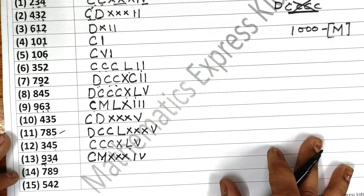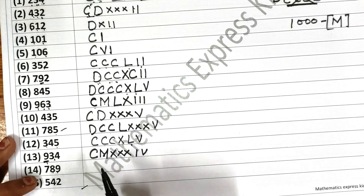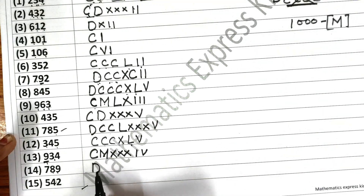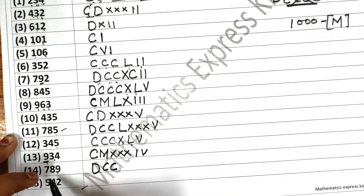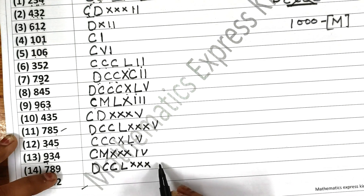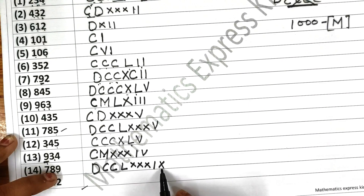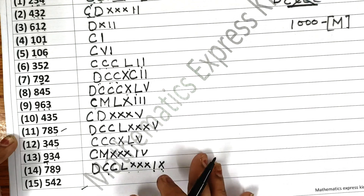Now the next one is 789. For 700: first write 500 and then add 200 to it — 500, 600, 700. Then write 80 as LXXX — 50, 60, 70, 80. And now 9: I have written 10 first and subtracted 1 from it, giving IX. So this is my 789.